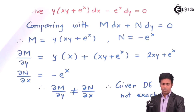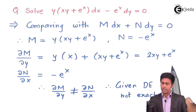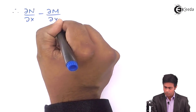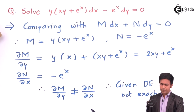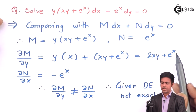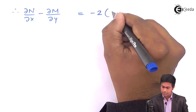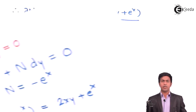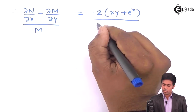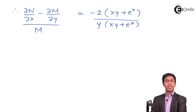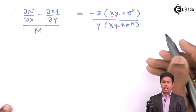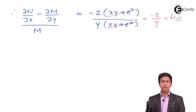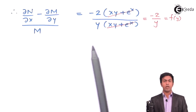The value of ∂N/∂x is −e^x and ∂M/∂y is 2xy + e^x. Subtracting, ∂N/∂x − ∂M/∂y = −e^x − (2xy + e^x) = −2xy − 2e^x = −2(xy + e^x). In the denominator we have M = y(xy + e^x). We can cancel the factor (xy + e^x), giving −2/y, which is a function of y only.